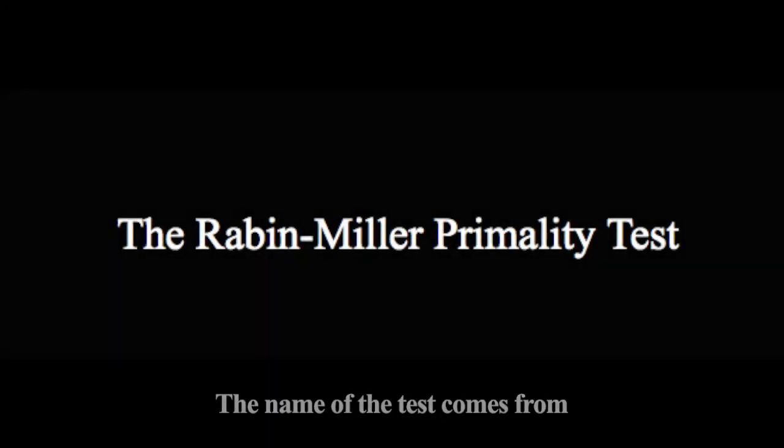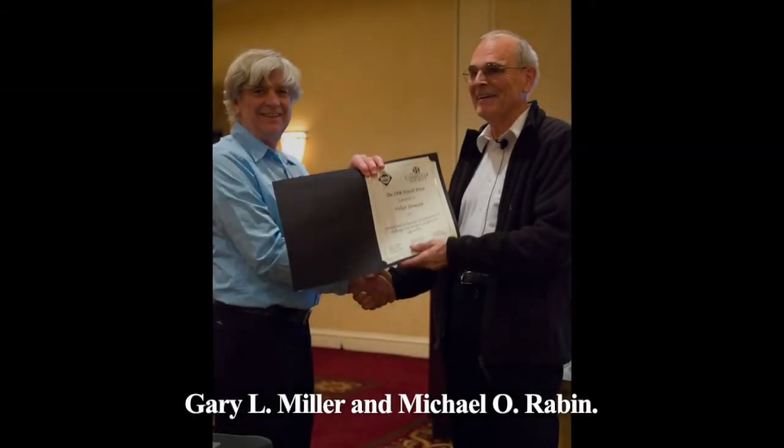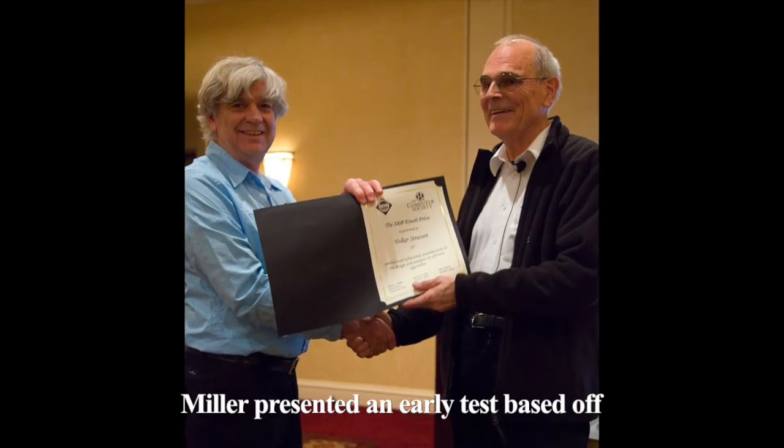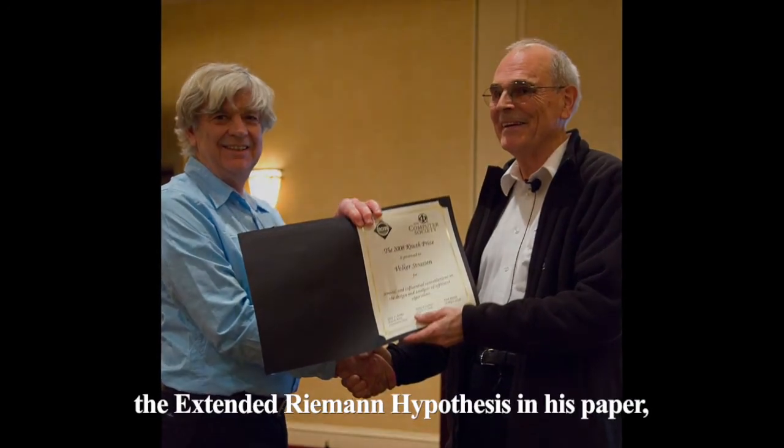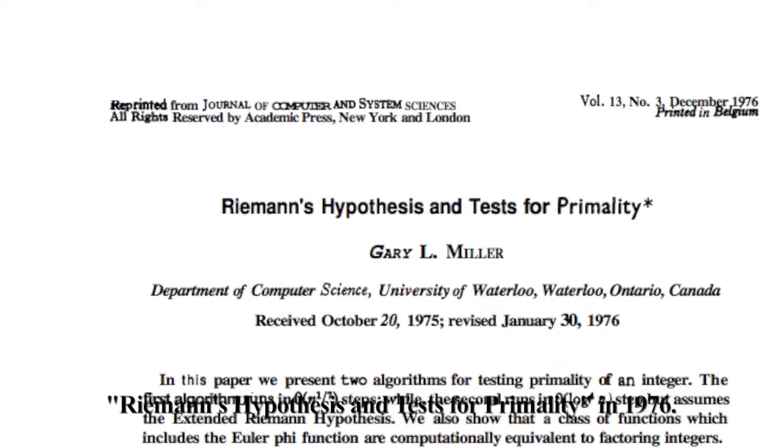The name of the test comes from two renowned computer scientists and mathematicians, Gary L. Miller and Michael O. Rabin. Miller presented an early test based off the extended Riemann hypothesis in his paper Riemann's Hypothesis and Tests for Primality in 1976.